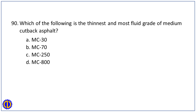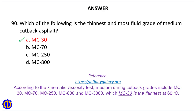Question 90. Which of the following is the thinnest and most fluid grade of medium cutback asphalt? A. MC-30. B. MC-70. C. MC-250. D. MC-800. Answer: A. MC-30. Reference: InfinityGalaxy.org — according to the Kinematic Viscosity Test, medium curing cutback grades include MC-30, MC-70, MC-250, MC-800, and MC-3000, of which MC-30 is the thinnest at 60 degrees Celsius.